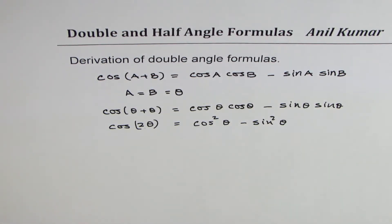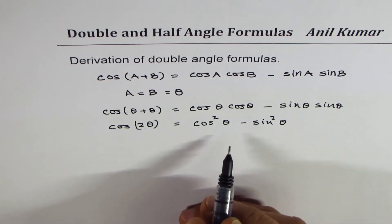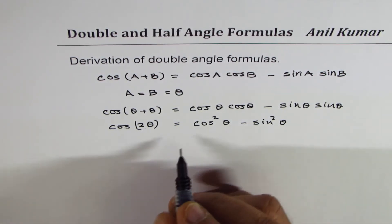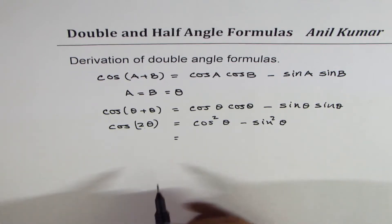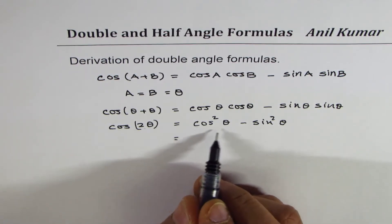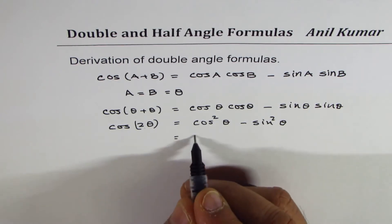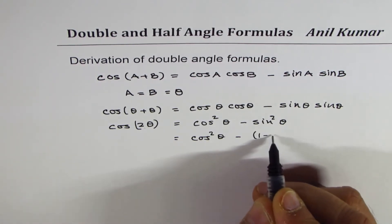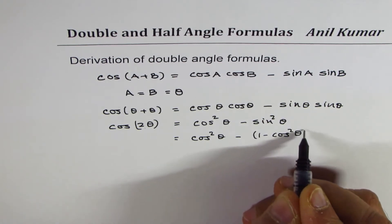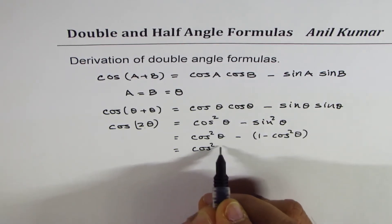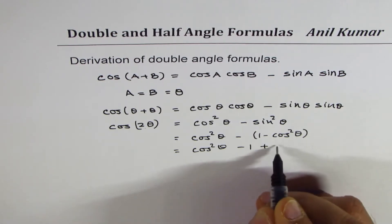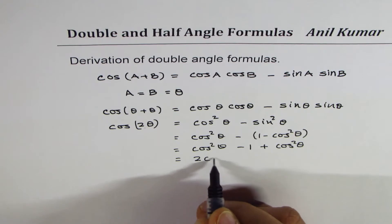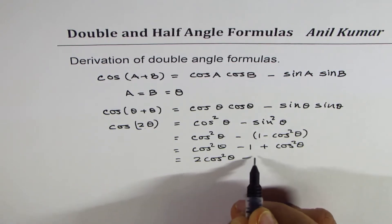This is a standard identity which most of you know. I've derived it so it helps us remember it to solve the question we have. Now since we want to relate cos 2 theta with cos squared theta, we can write sin squared theta as 1 minus cos squared theta. That gives us 2 cos squared theta minus 1.